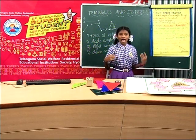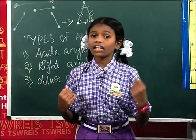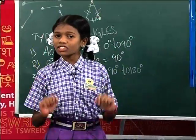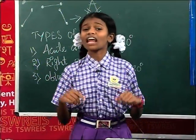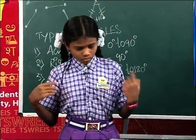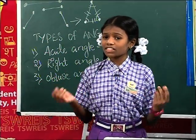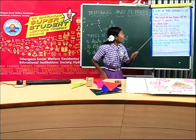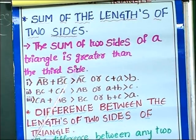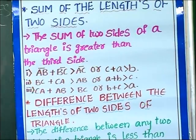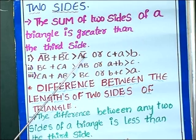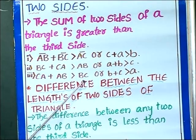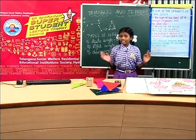Friends, in this triangle we have one property — that is the relationship between the sides of a triangle. We have two types: the sum of the lengths of any two sides of a triangle, and the difference between any two sides of a triangle. Now I would like to describe the sum of the lengths of any two sides. The conclusion is: the sum of any two sides of a triangle is greater than the third side. In triangle ABC, AB + BC > AC, BC + CA > AB, and CA + AB > BC.